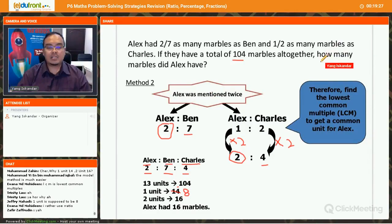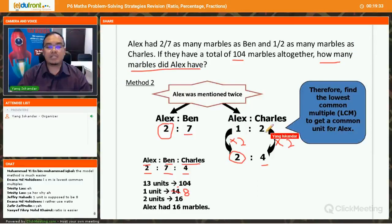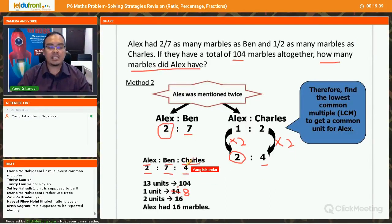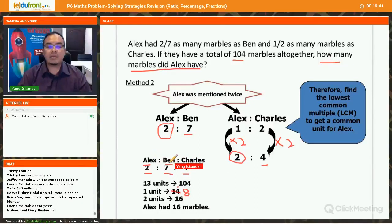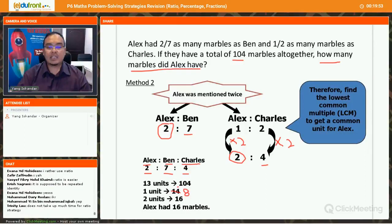So you can see here, how many marbles did Alex have? Alright? So it depends on the question. Sometimes the question may ask you, how many marbles did Charles have? Okay? What Charles have? So you can see it is 4 units. I ask you, how many marbles did Ben have? So Ben would be 7 units. Okay? Alright? Understand? Very simple. Okay? So that is the strategy. What strategy we call this? Repeated identity strategy.